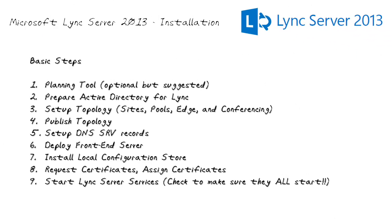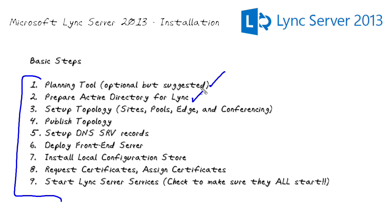Just like anything in the Microsoft world, you have basic steps for installation. In this micro nugget we're not obviously going to cover every single thing. For that, you want to take my Lync Server 2013 series, 70-336, where we go through the planning tool, prepare Active Directory, talk about setting up the topology, publishing the topology, adding the appropriate SRV records if necessary. Then we get our front-end server running, install our local configuration store, make sure our certificates were our default certificate. And if we're using our Edge environment, we're going to need those as well.